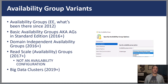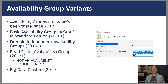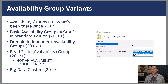In 2016, we also got domain-independent availability groups, which means you still needed an underlying Windows Server Failover Cluster, but it didn't need to be domain-joined. There were some pluses and minuses to that; the situation got better with Windows Server 2019. You don't need Active Directory to deploy, even though you might be using a cluster. In 2017, we got AGs in Linux — it was just part of the SQL Server deployment, not a net new change other than the fact that we got a Linux version in 2017.